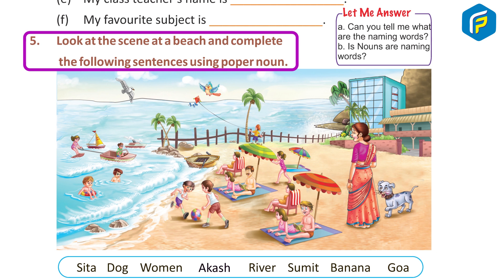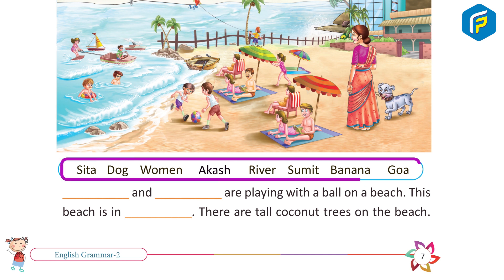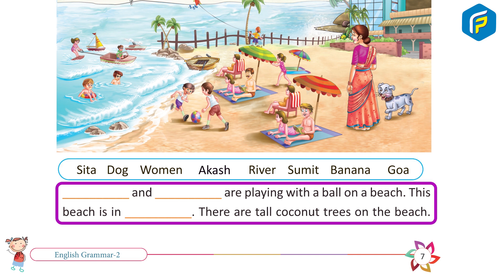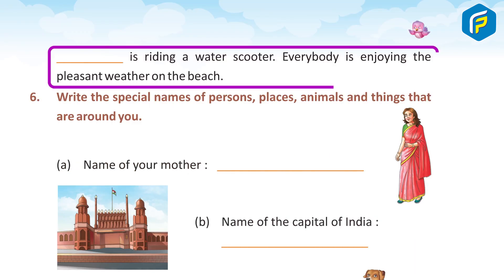Exercise 5: Look at the scene at a beach and complete the following sentences using proper nouns. Word choices: Sita, Dog, Woman, Akaash, River, Samit, Banana, Goa. Sentences: Dash and Dash are playing with a ball on the beach. This beach is in Dash. There are tall coconut trees on the beach. Dash is riding a water scooter. Everybody is enjoying the pleasant weather on the beach. Answers: Sita and Gita, Goa, Samit, Samit.